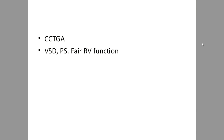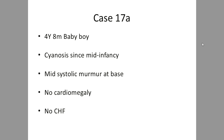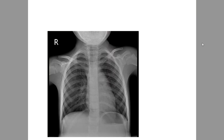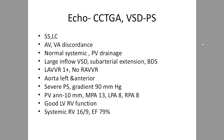In corrected TGA: septal Q-waves are present in right-sided leads (V1, V3R, V4R) and absent in left-sided leads (V6). Q-waves need not be present in V1 to diagnose corrected TGA — absence of Q-waves in V6 is more important than presence of Q-waves in V1. Coexisting cardiac lesions may distort these findings. A case with VSD and PS showed TOF-like RV dominance but the ECG still showed enough clues to diagnose the corrected TGA.